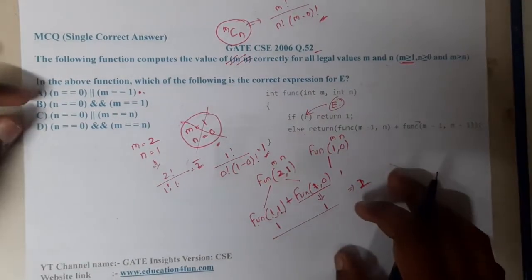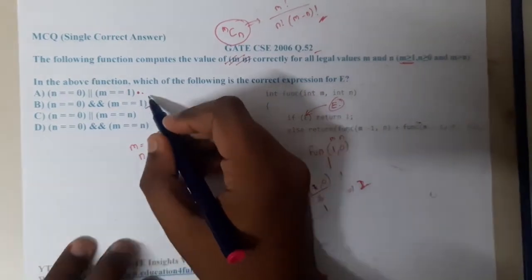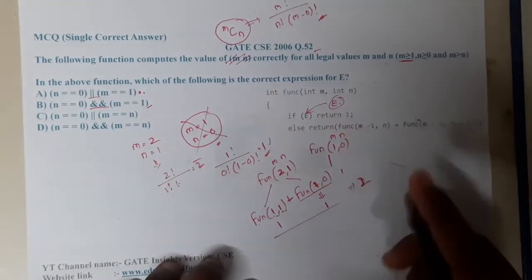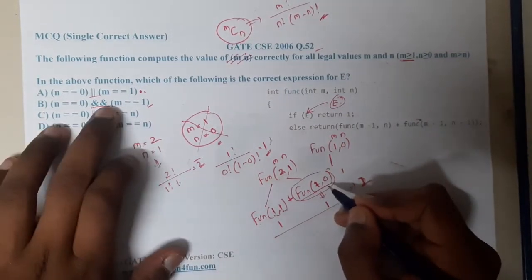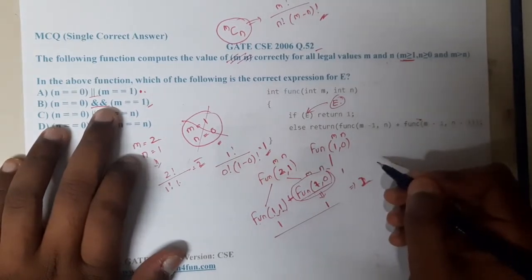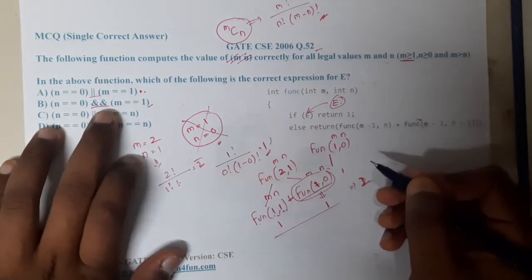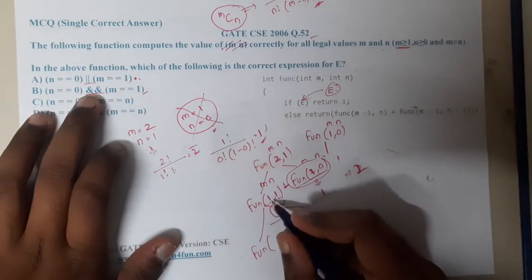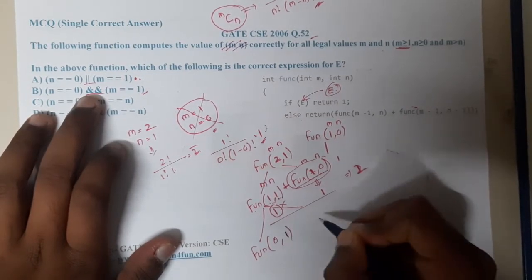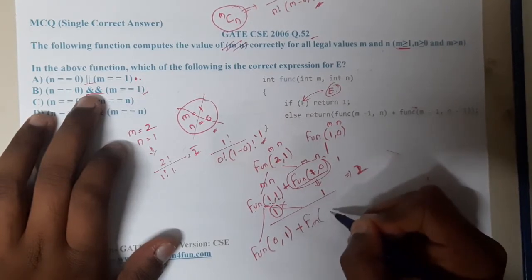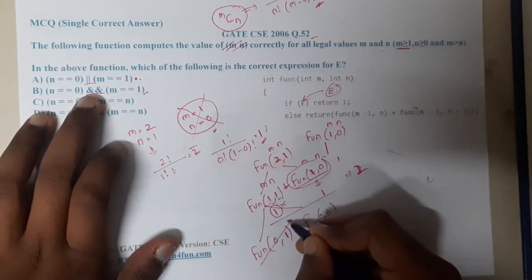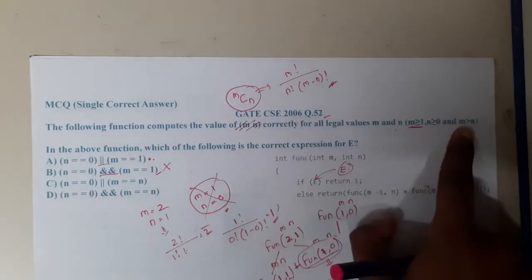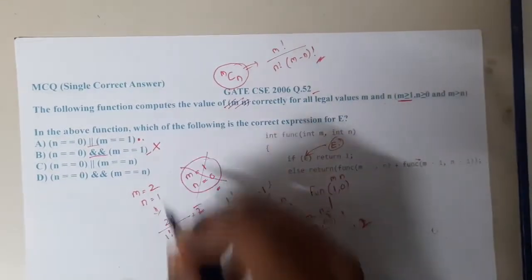Option 2 is the same but uses AND instead of OR in the base condition. AND means both conditions must be true to return 1. For func(2, 1), neither n == 0 AND m == 1 is satisfied together, so it recurses further and eventually reaches func(0, 1), which is illegal since m must always be greater than or equal to 1. Hence option 2 is completely wrong.